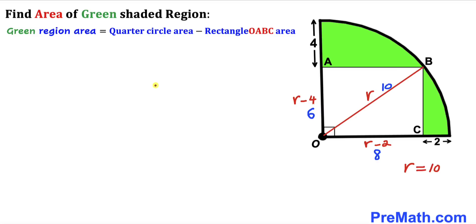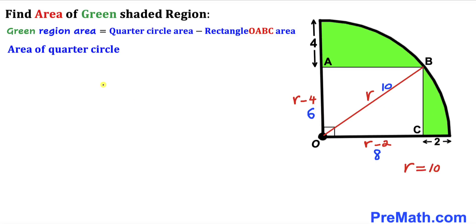Now let's observe that the green shaded area equals the quarter circle area minus the area of rectangle OABC, as represented by this equation. Let's calculate the area of the quarter circle.